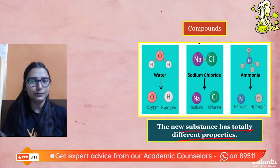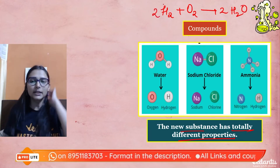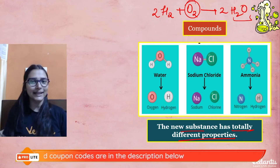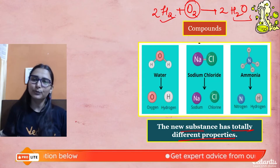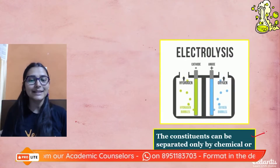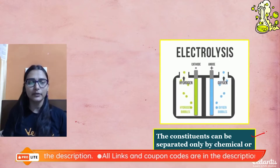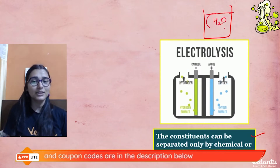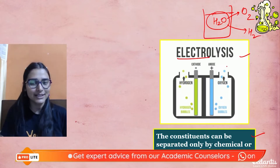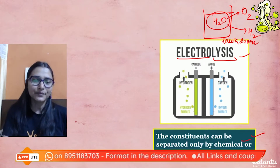The new substance formed in a compound has completely different properties from its constituents. For example, oxygen supports combustion and hydrogen is flammable, but water extinguishes fire — completely new properties. Also, if you want to separate the constituents of a compound, you cannot do it by a general method. You need a chemical method, like electrolysis to separate water into hydrogen and oxygen gases.